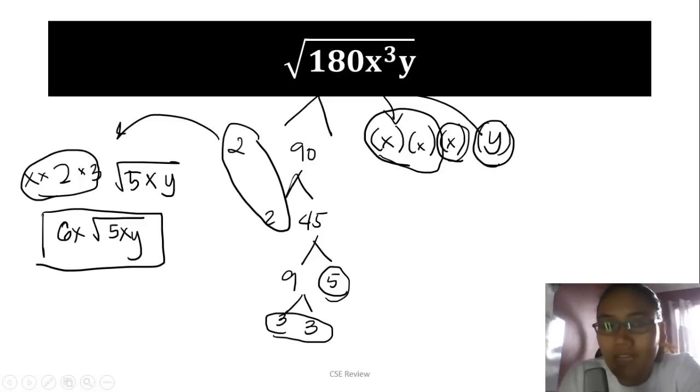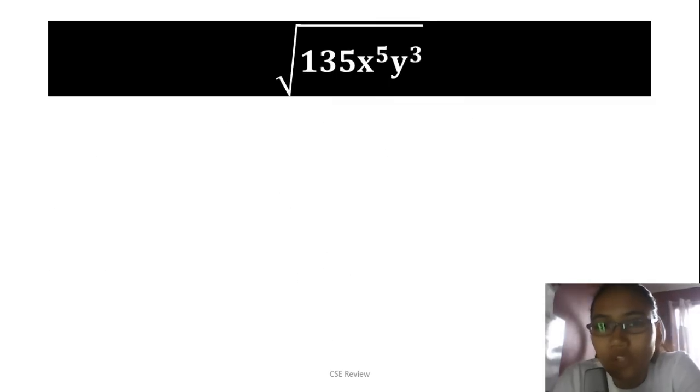Again, same as when there are only digits—extract everything with a pair. When you have an exponent, that letter repeats. So however many pairs you have, that's how many you extract. Now try this yourself. Hit pause and see if you're correct.